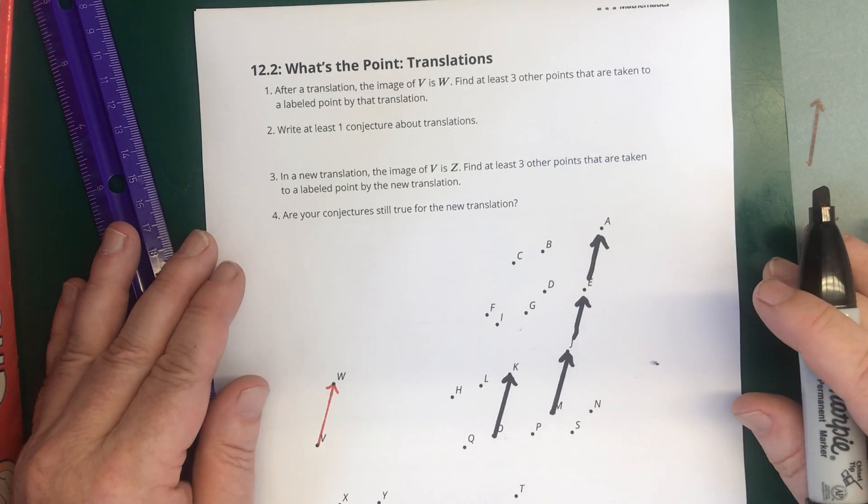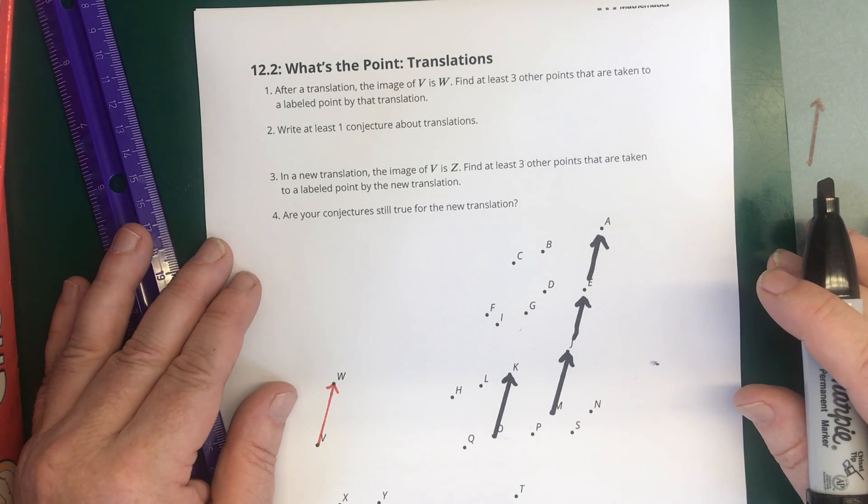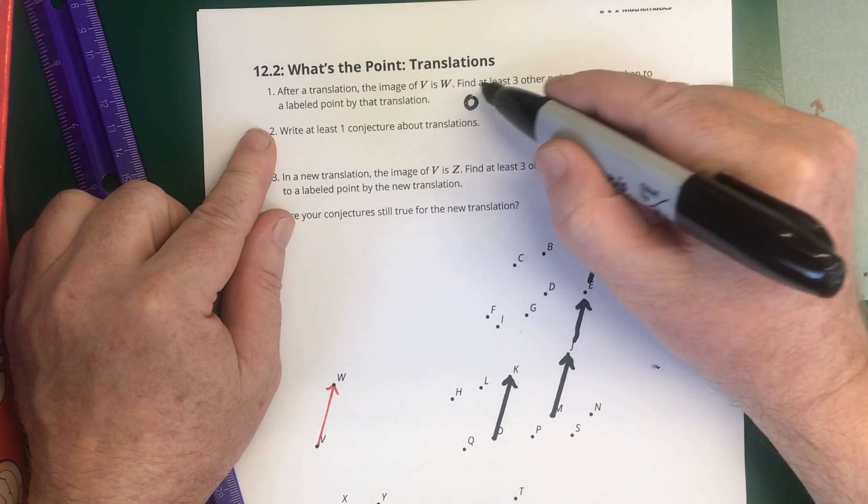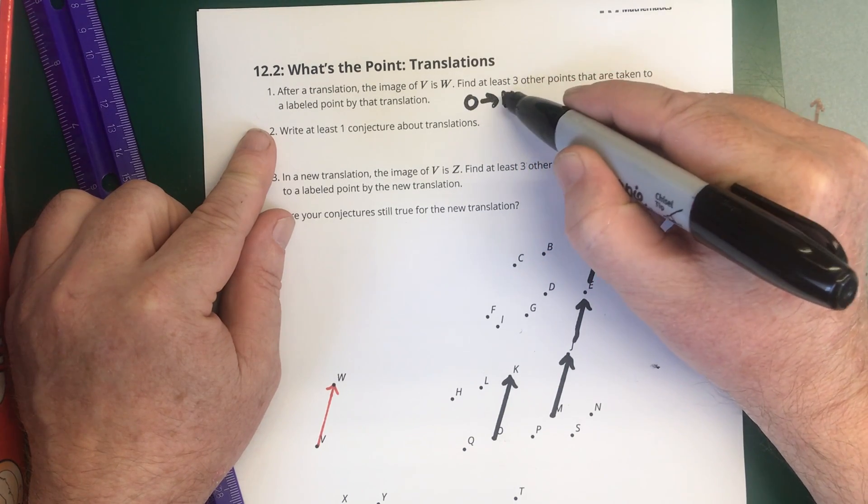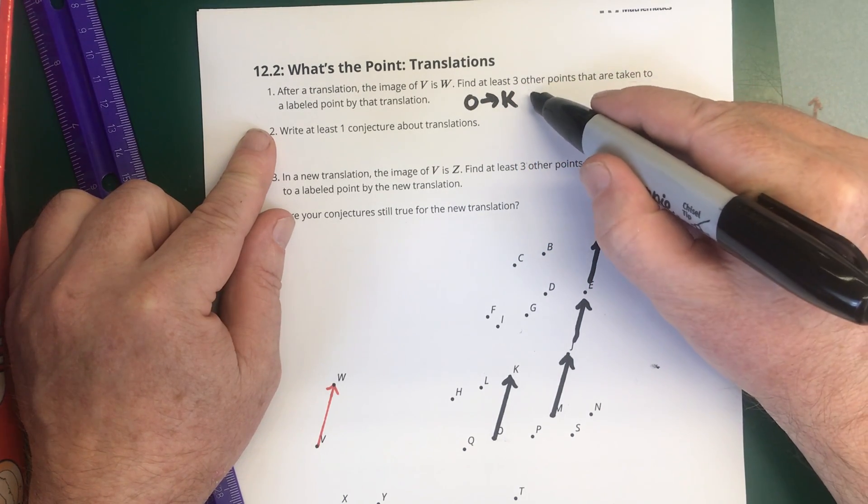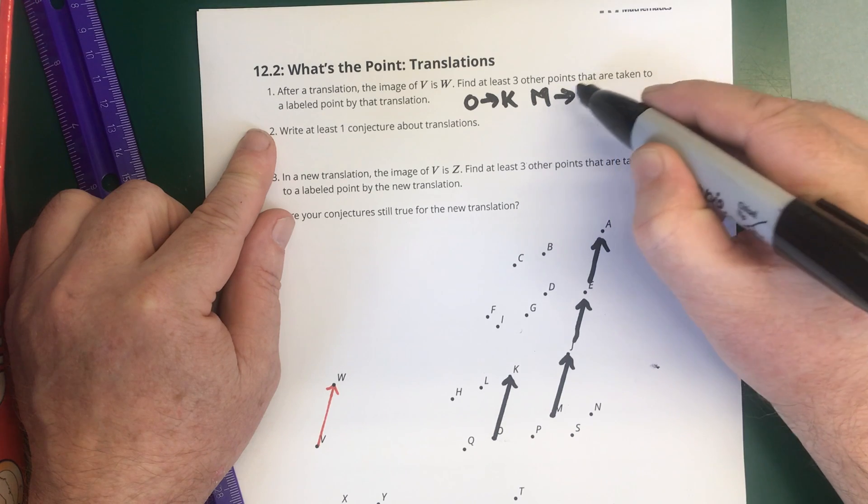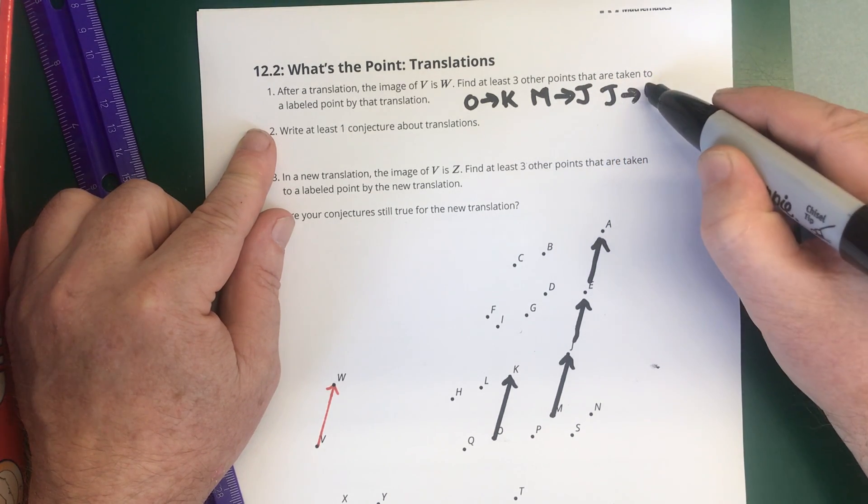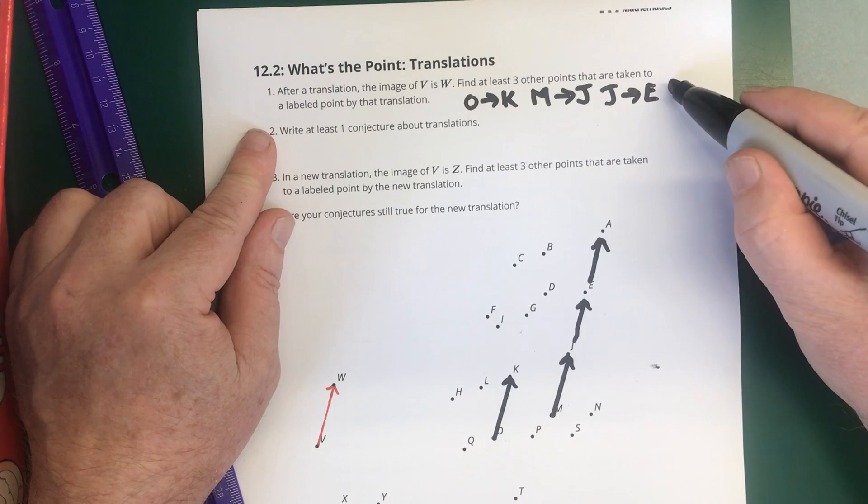So the answers for problem one would be O goes to K. And there's a lot of answers that are right. M goes to J. And J goes to E. And E goes to A.